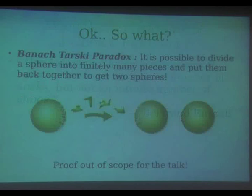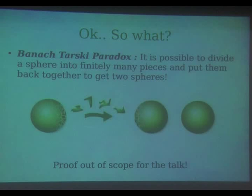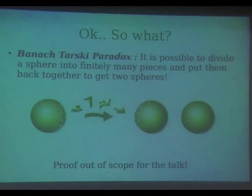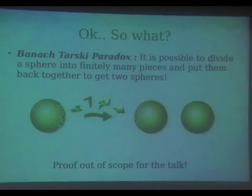The Banach-Tarski paradox says — and we are back to the same picture from the first slide — that you can divide a sphere into finitely many pieces and put it back together to get two spheres. It sounds very counterintuitive. The intuition is that volume has to be conserved — they are finite pieces and I am not stretching, so volume should be conserved. But what makes this possible is that those pieces can have no volume. In mathematical language it is called measure. The axiom of choice allows the construction of sets for which volume cannot be defined, so there is no question of volume conservation.